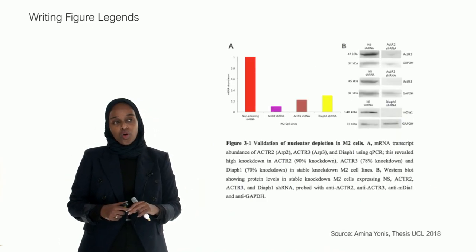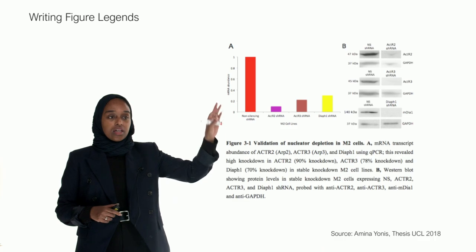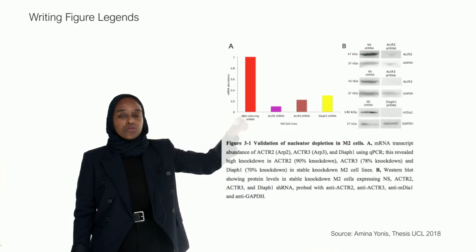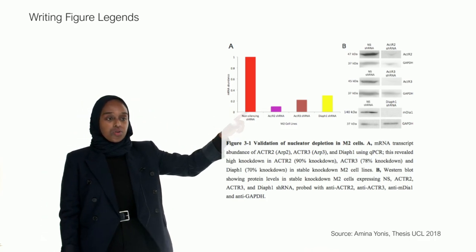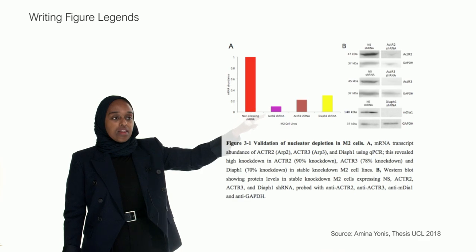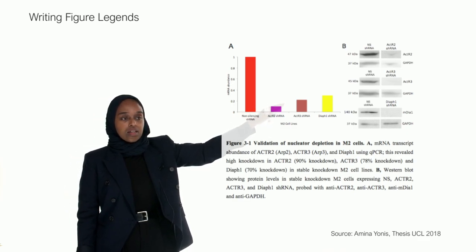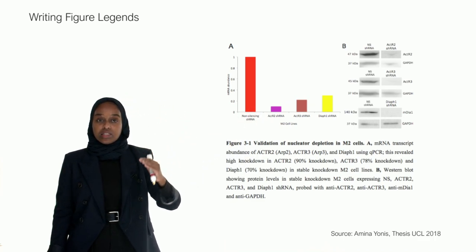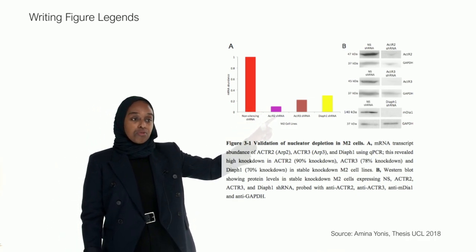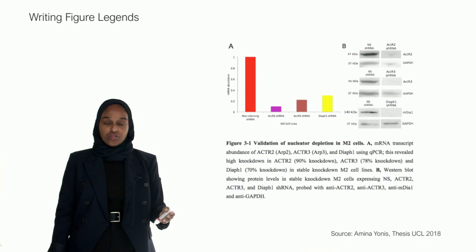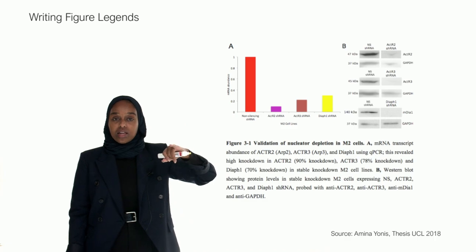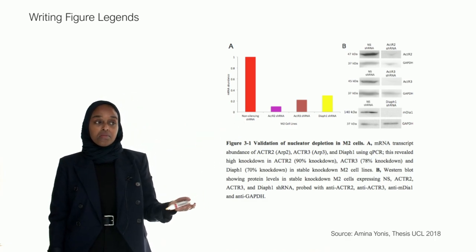So here is an example of a really good figure legend. So here is a graph. You can see that this is the control in red and then here are the knockdowns. So the protein has been deleted. So in here it's full, so it's 1, and the abundance is 1, so it's like 100%. Then you can see it's a lot lower, it's like 10%, that's like 20%, and that's like 30%. So it's been deleted. And I've kept the colours consistent. So all throughout the thesis, the control is always in red, that protein is always in purple, that one's always in yellow. You can see the font size is the same. Font size between A and B is the same. I've kept the font itself the same. I think I used Arial.